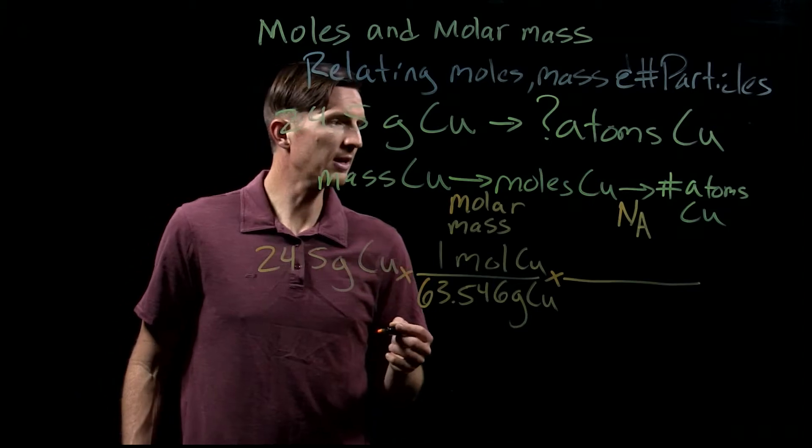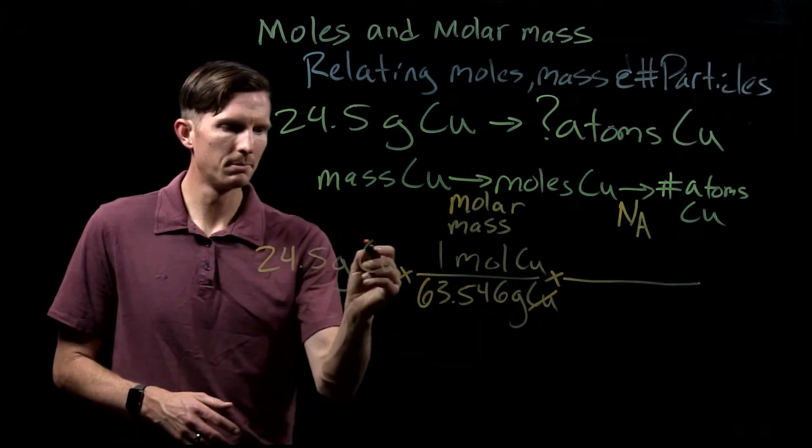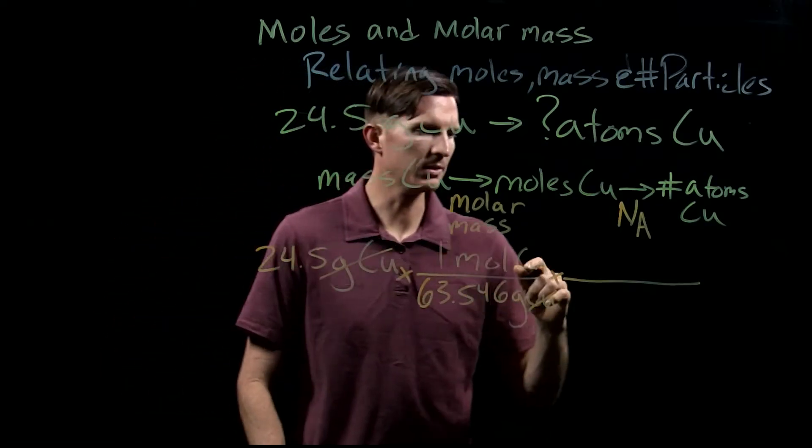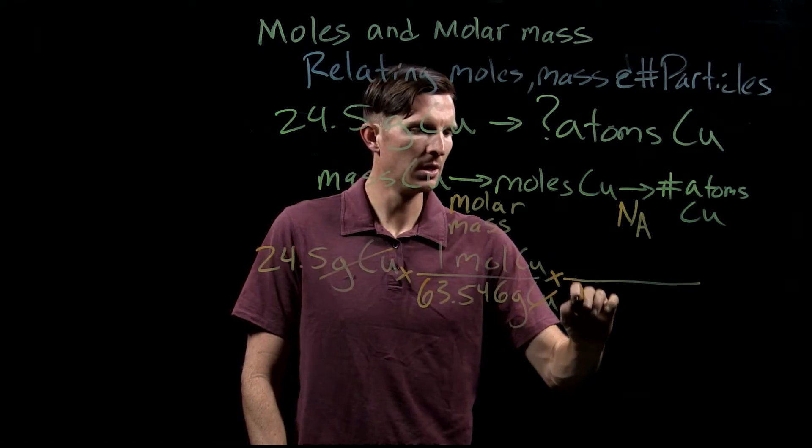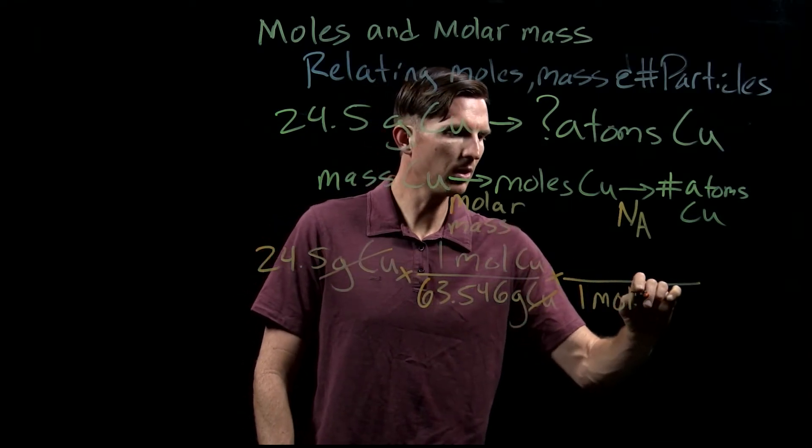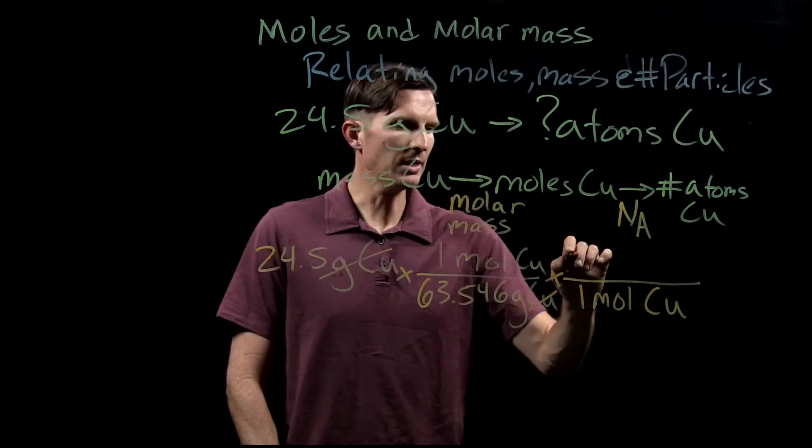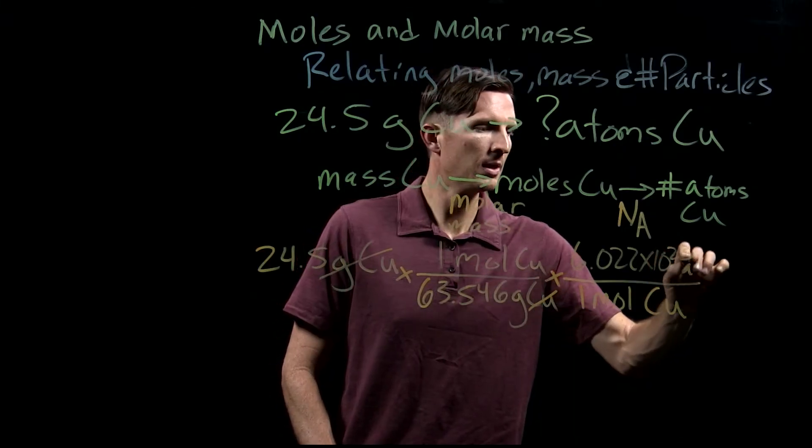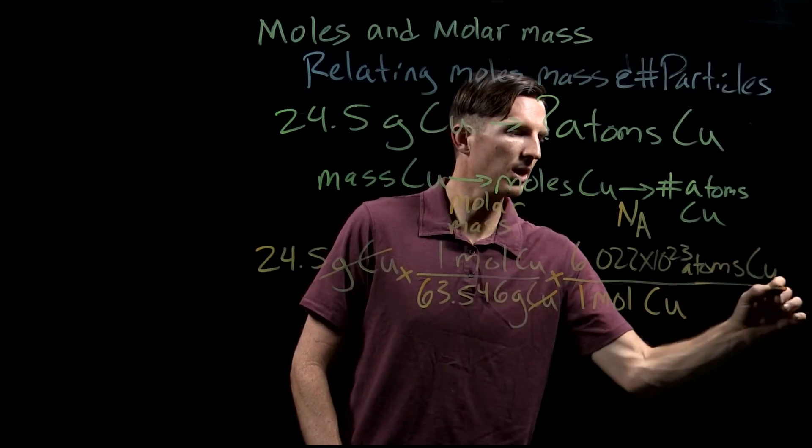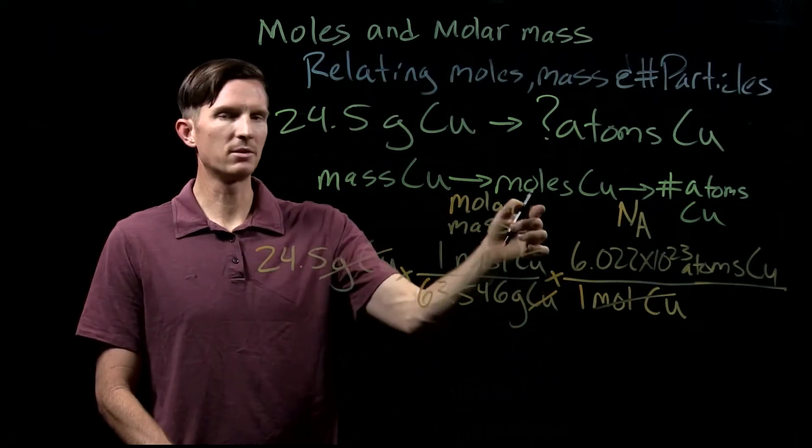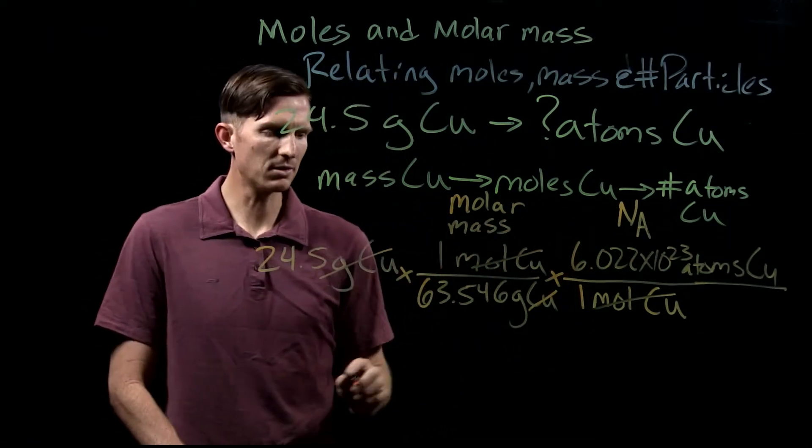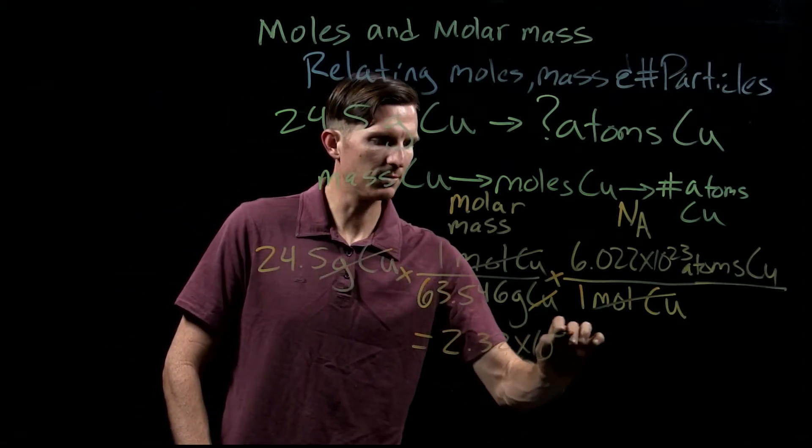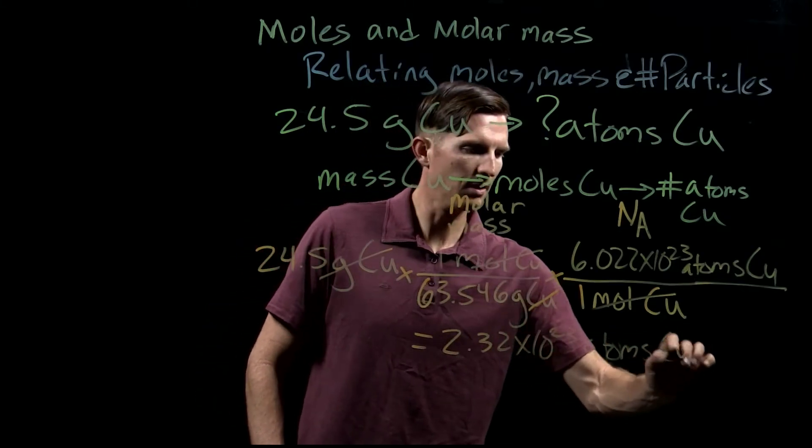We're going to find out the number of atoms of copper. We now need to go from grams to moles, and then moles to number of atoms in this case. Whatever we want to deal with, it could be some kind of number of particles. Based upon Avogadro's number, one mole of whatever it would be, in this case copper, is equivalent to Avogadro's number, 6.022 times 10 to the 23rd atoms of copper. So now we've converted from mass to moles, moles to atoms using these two conversion factors, and we would find out that we have 2.32 times 10 to the 23rd atoms of copper.